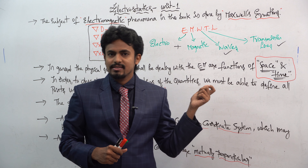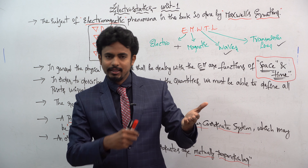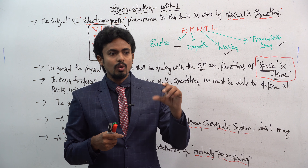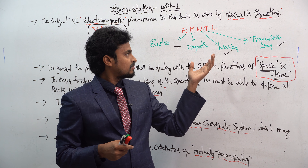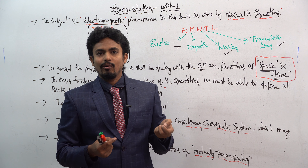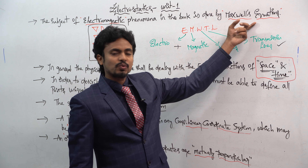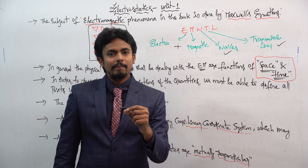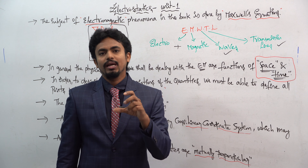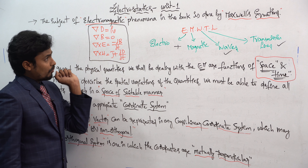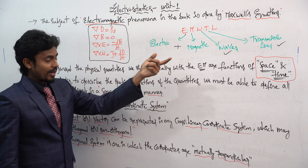In the 1800s, scientists like Coulomb and Gauss were writing a lot of papers based on their thoughts and experimental analysis. What Maxwell did — our hero of the subject — was take all that theory and combine it into mathematical equations.